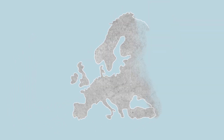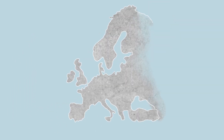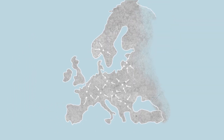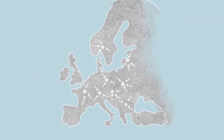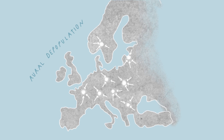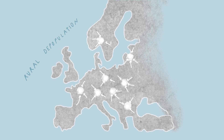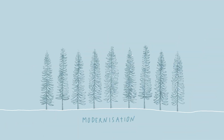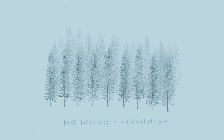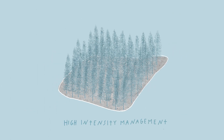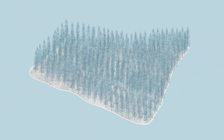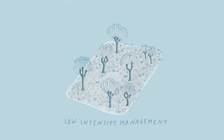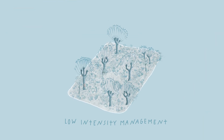Over the last century, land abandonment has increased, particularly in parts of Europe. This is driven by factors like rural depopulation, as people move to cities, and modernization in agriculture and forestry, favoring high-intensity practices and making many traditional low-intensity techniques obsolete.